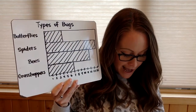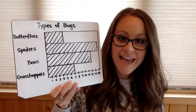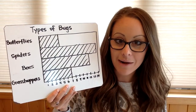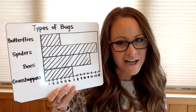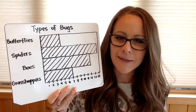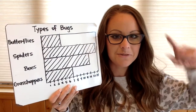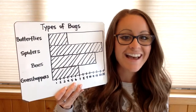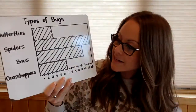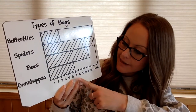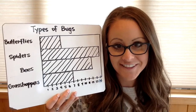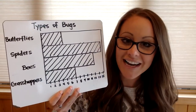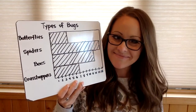Last one: how many fewer butterflies than bees and grasshoppers were counted in the park? This is a multi-step problem. Butterflies was 5 — lock that in your mind. Then compare it with bees and grasshoppers: bees was 12, grasshoppers was 7. What's 12 plus 7? 19, right? Then take 19 minus 5, and what do you get? 14. Nice work!